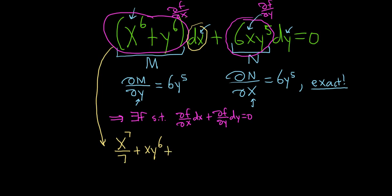And whenever you integrate with respect to X, you have to add an unknown function of the other variable. So we have to add a G of Y. So what we've written down is actually F of X, Y. But we don't know the G.